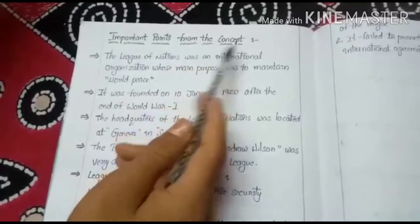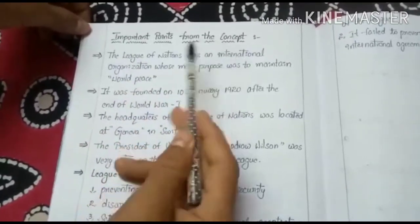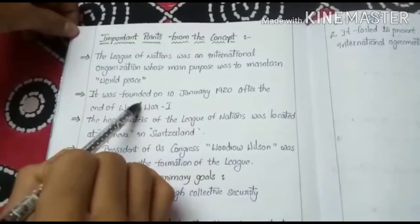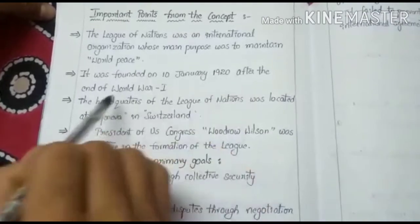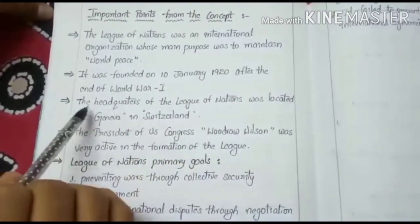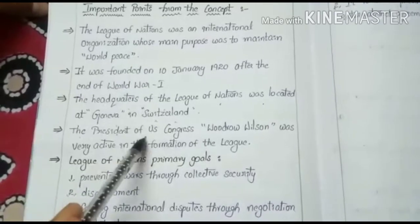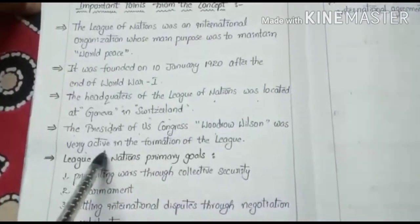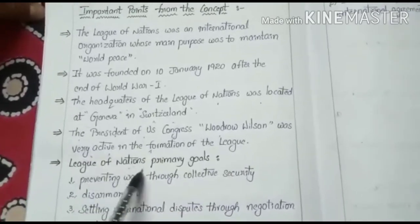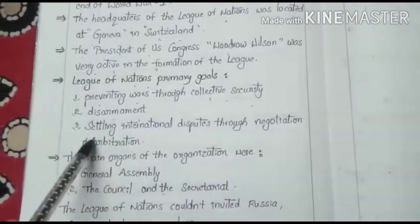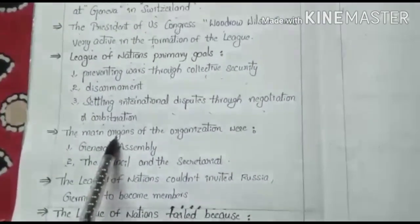Important points from the concept: The League of Nations was an international organization whose main purpose was to maintain world peace. It was founded on 10 January 1920 after the end of World War I. The headquarters was located in Geneva, Switzerland. President Woodrow Wilson was very active in the formation of the League. Primary goals included preventing wars through collective security, disarmament, and settling international disputes through negotiation or arbitration. The main organs were the General Assembly, the Council, and the Secretariat.